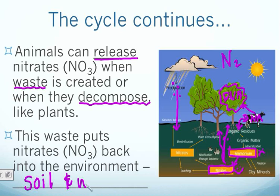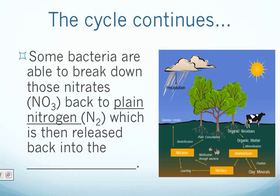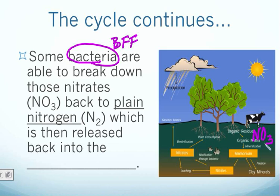Our final sphere is water — the hydrosphere. We've almost gone full circle with all spheres involved. We just need to get that nitrogen back to the atmosphere. There is a third type of bacteria that, when nitrates (NO3) are in the ground, removes the oxygen from the nitrogen, leaving just the single nitrogen atoms to join up and form N2 back into the atmosphere.